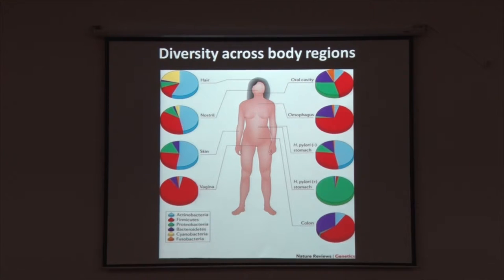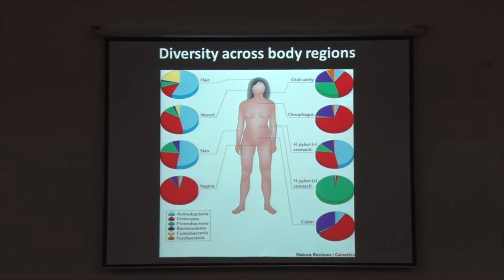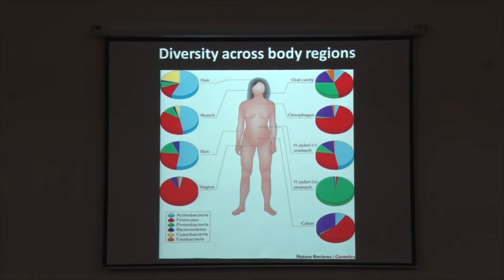The diversity of microorganisms across body regions is variable. These are different genera, but what you need to look at is the pie charts where colors appear in different magnitudes. If you focus on one particular color, say red, it does not appear uniformly across the different body parts. So there is diversity in the types of genera of the microbiome across different body regions.